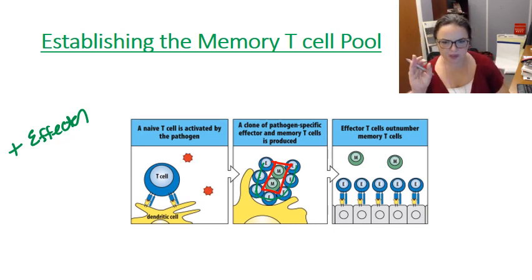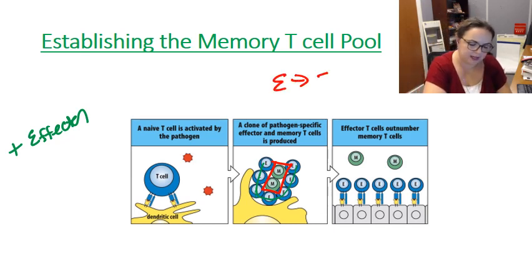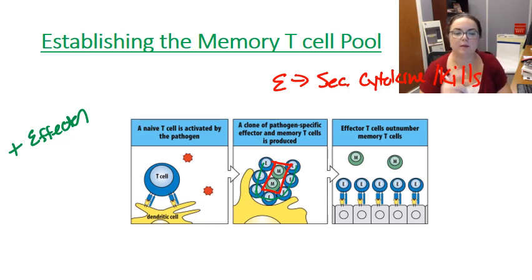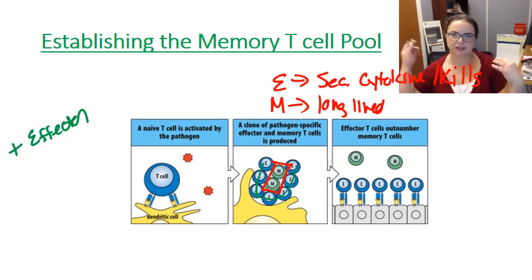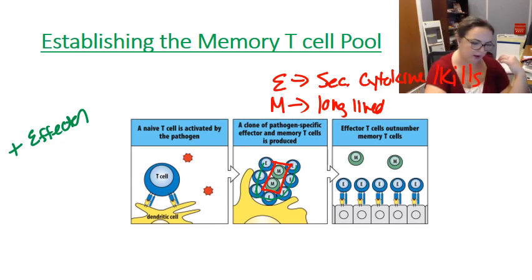For a T helper cell, the effector cells are those that are going to secrete cytokine, kill things. They're the ones that are actually going to do something about the pathogen. The memory cells are really kind of the historians. They're long-lived and present in small numbers, and they have very limited effector function. We're not really sending them into the fray, but we still need to make them so that next time we can make more effector cells in a faster fashion.